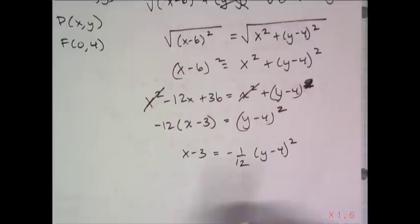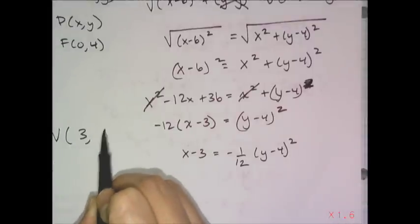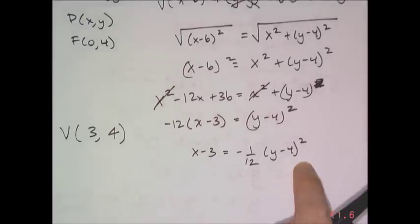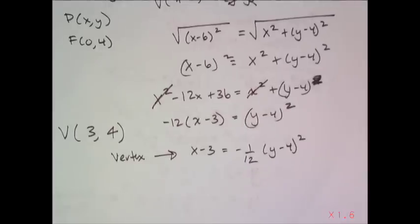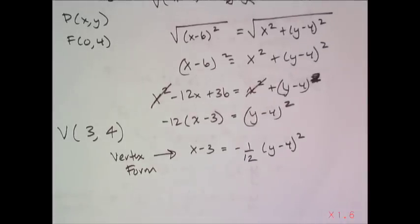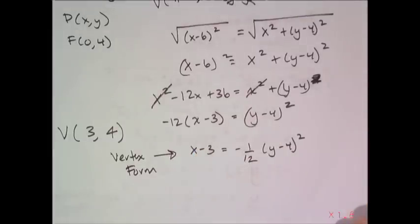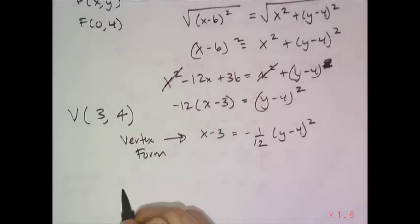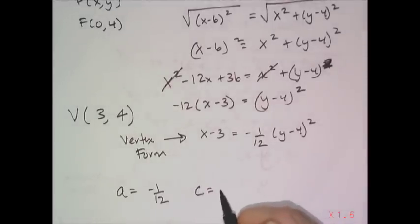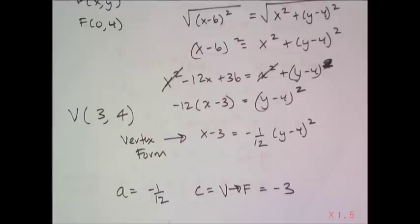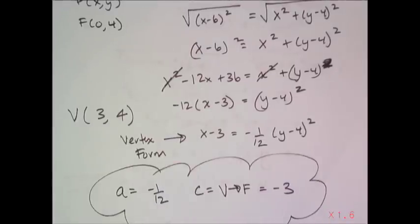We already knew the vertex was at (3, 4). Looking at this form, x minus 3 equals negative one-twelfth times (y minus 4)², this is vertex form for a non-function parabola — it's just the x and y's swapped locations compared to the standard form. The a value here is negative one-twelfth, and c, the distance from vertex to focus, was negative 3.